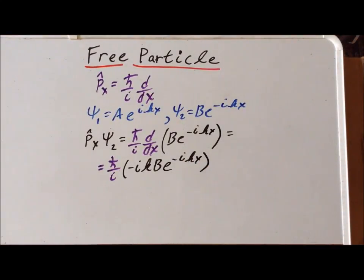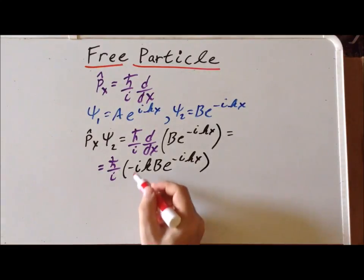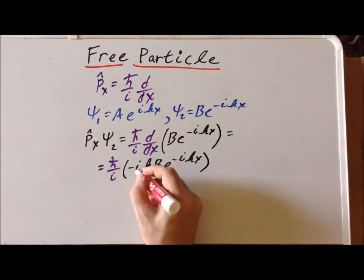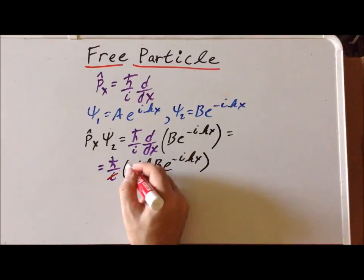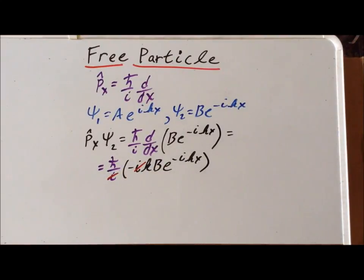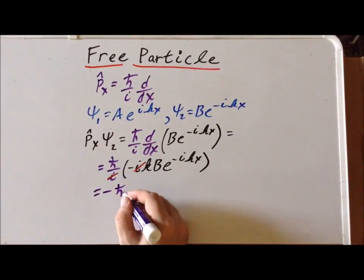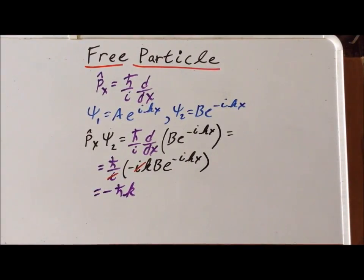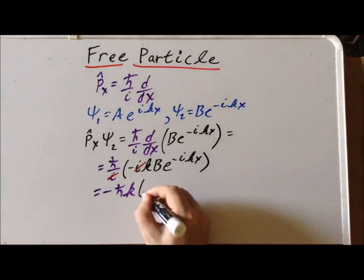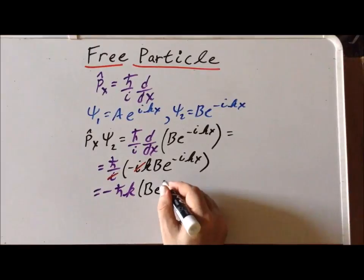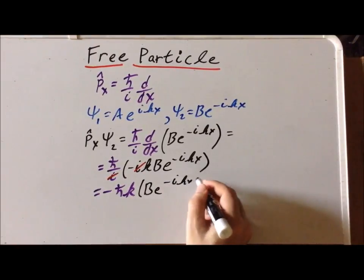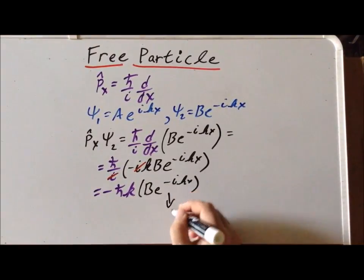Similarly to the previous case, we notice that we have minus i and i, so the i's can cancel. So we have to remember we have the minus sign. That gives us minus h-bar k times B e to the minus i kx. Recall this is our wave function psi 2.